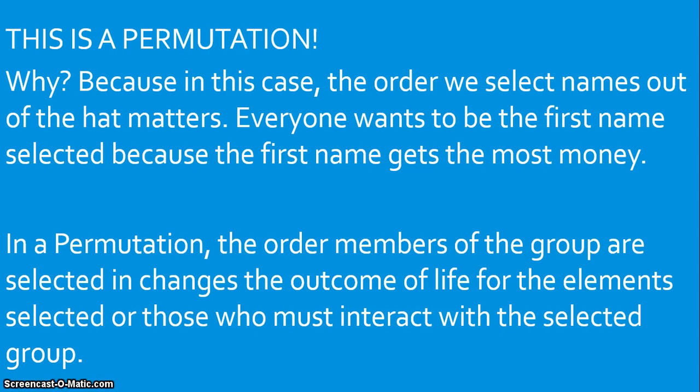In a permutation, the order members of a group are selected in changes the outcome of life for the element selected. As we saw, only the student who's called first gets the $1,000. And because of that, we have to use the permutation formula.